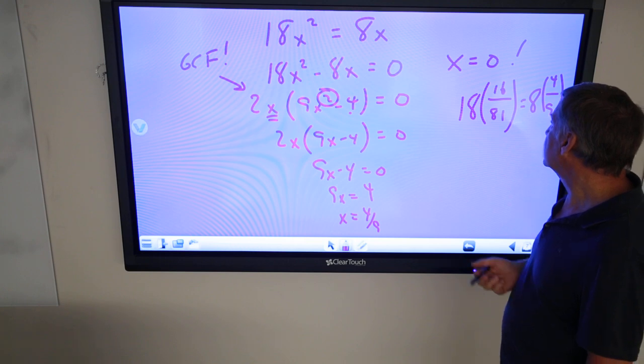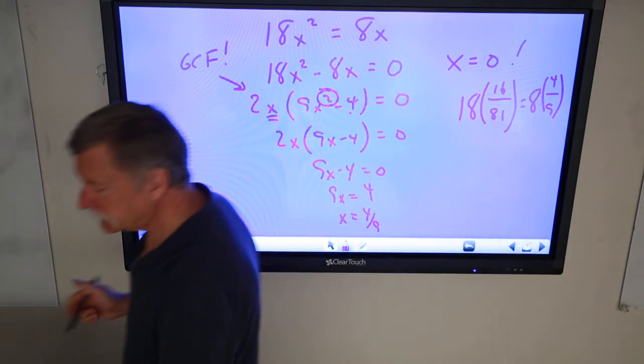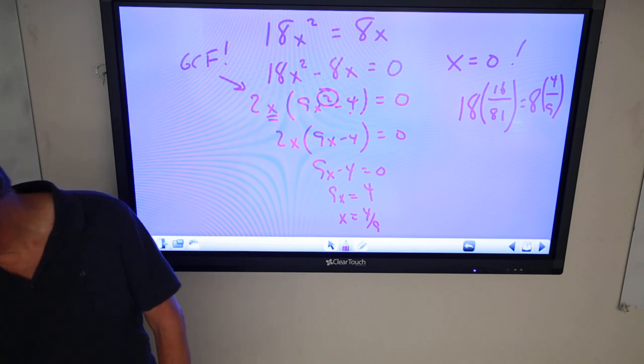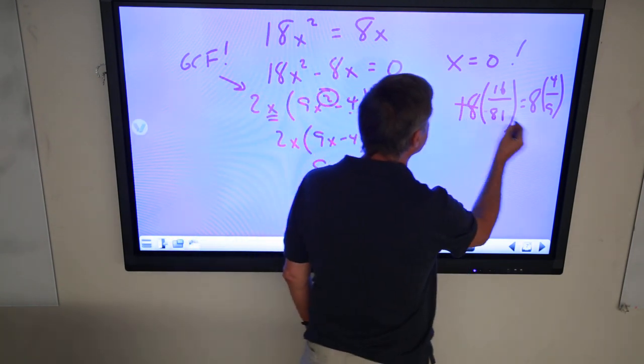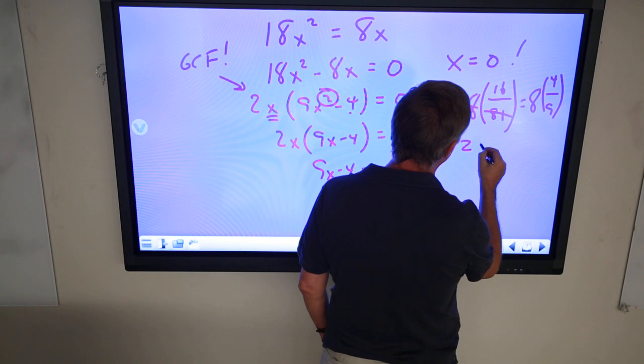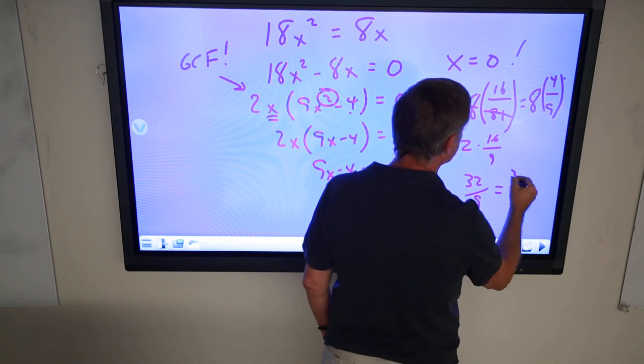18 goes in there, I'm hoping it's going to go in there like, yeah, I can divide that by 9 and get 2 times 16 over 9, which is 32 over 9, and over here, top times the top, 32 over 9.